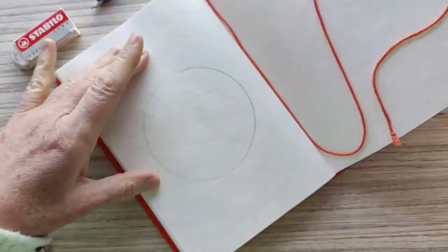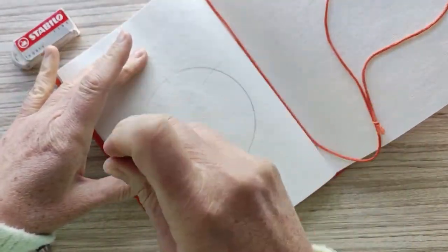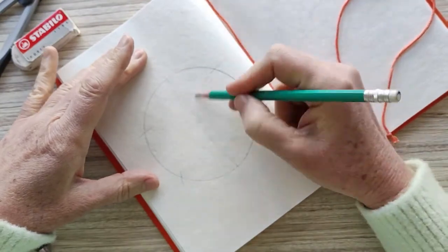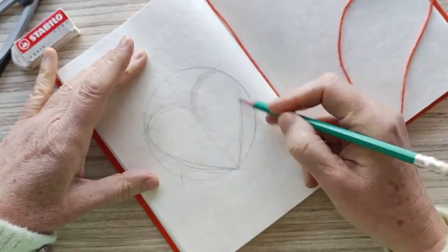So we start out with a circle and with a line in the middle so we understand there's a left and right and try to keep the symmetry.